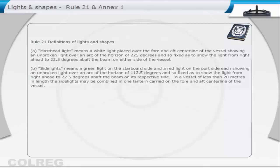In a vessel of less than 20 metres in length, the side lights may be combined in one lantern, carried on the fore and aft centreline of the vessel.